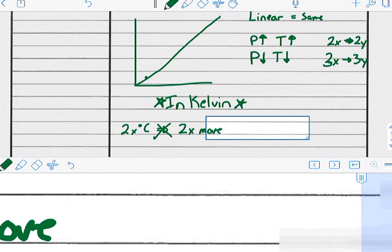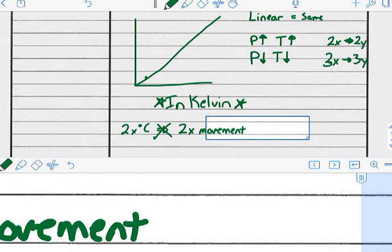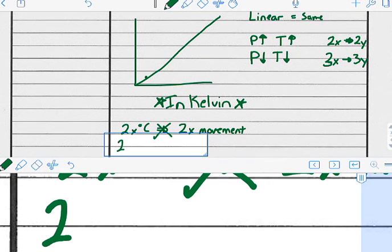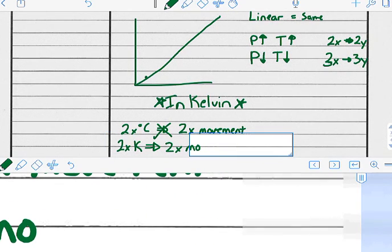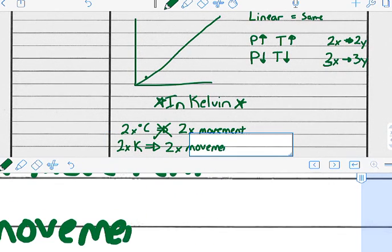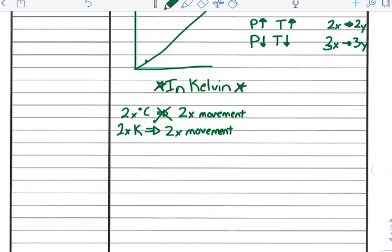But that is the case when you use Kelvin. Two times the Kelvin temperature does mean two times the movement. So two times the Kelvin temperature does mean two times the pressure. So we have to be very careful there that we're making sure that we're looking at our values in terms of the temperature.